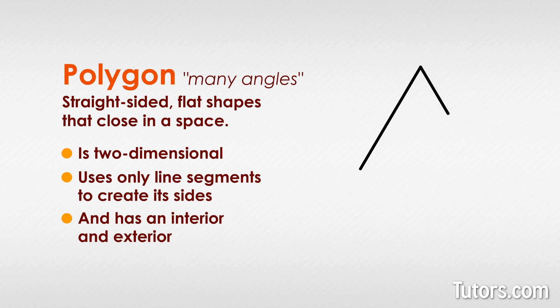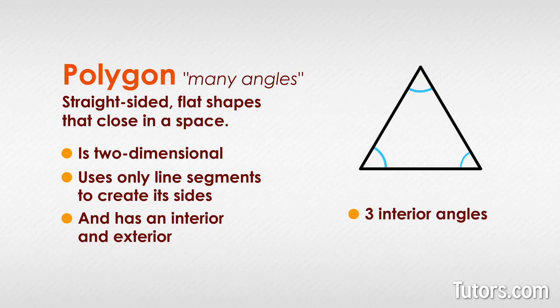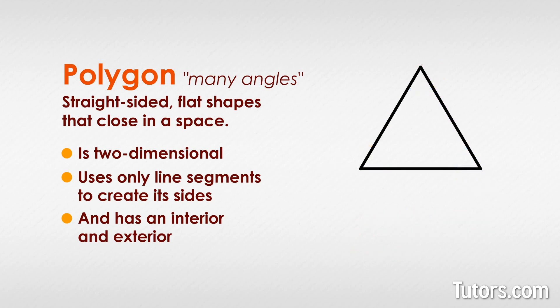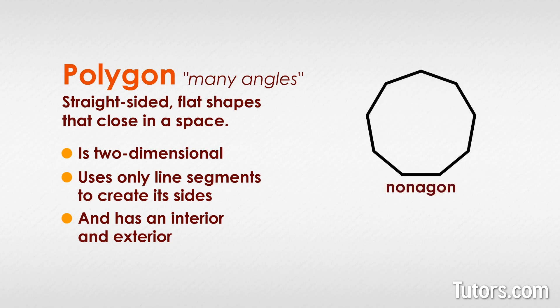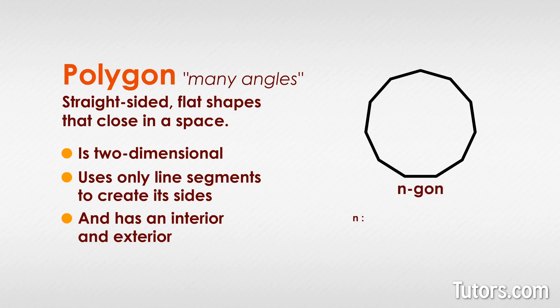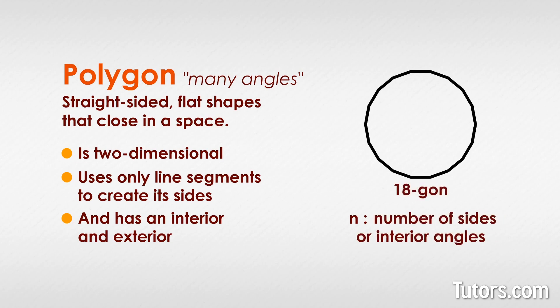The simplest polygon, the triangle, has three interior angles, three exterior angles, and three sides. You can have polygons with so many sides they appear to be circles, even when they are not. Once you get above 10 sides, most math students just say 'n-gon,' where n is the number of sides or interior angles — as in an 18-gon or a 25-gon — rather than trying to remember the Greek origin name.